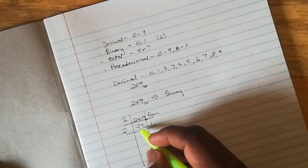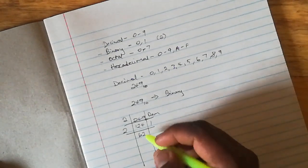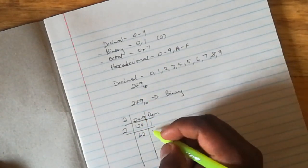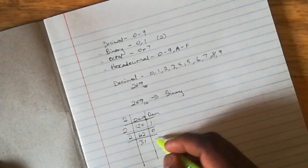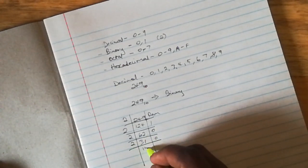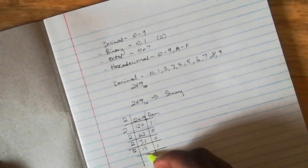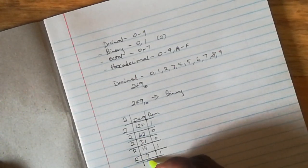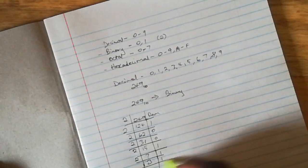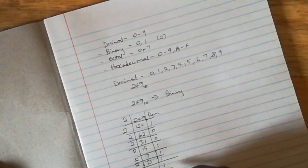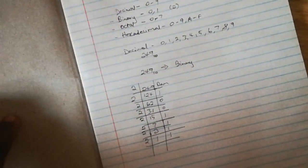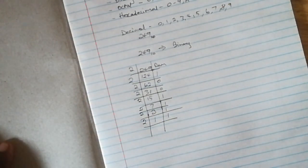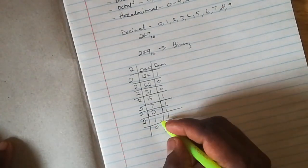2 dividing into 124 gives 62 with remainder 0. 2 into 62 is 31 with no remainder. 2 into 31 is 15 with remainder 1. 2 into 15 is 7 with remainder 1. 2 into 7 is 3 with remainder 1. 2 into 3 is 1 with remainder 1. And 2 into 1 will be 0 and I'll bring this 1 here as my remainder.